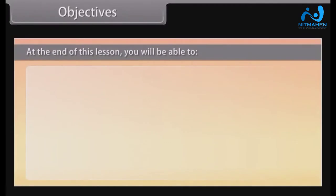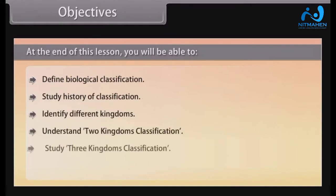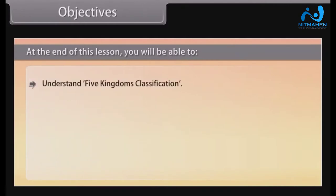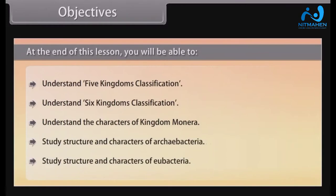At the end of this lesson, you will be able to: define biological classification; study the history of classification; identify different kingdoms; understand two-kingdom classification; study three-kingdom classification; know about four-kingdom classification; understand five-kingdom and six-kingdom classification; understand the characters of kingdom Monera; and study the structure and characters of Archibacteria and Eubacteria.